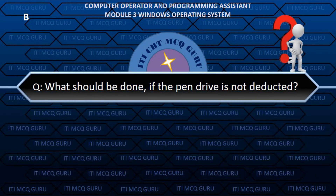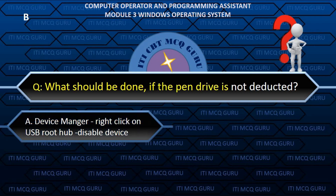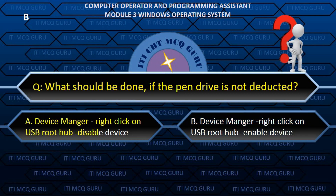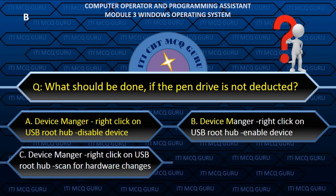What should be done if a pen drive is not detected? B. Device Manager > Right-click on USB Root Hub > Enable Device.